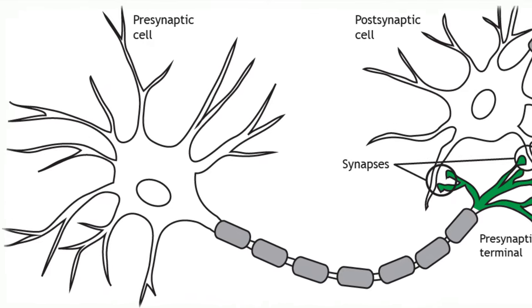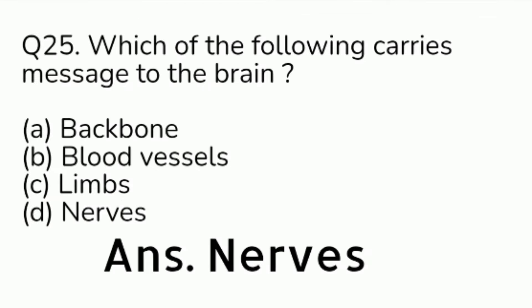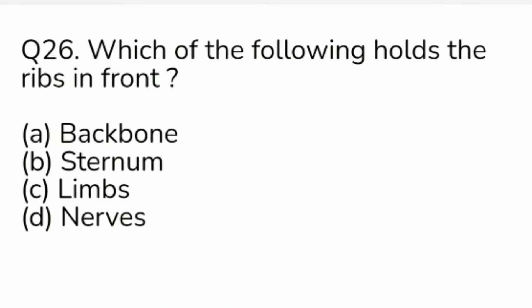Question number 26. Which of the following holds the ribs in front? Option A: backbone. Option B: sternum. Option C: limbs. Option D: nerves.